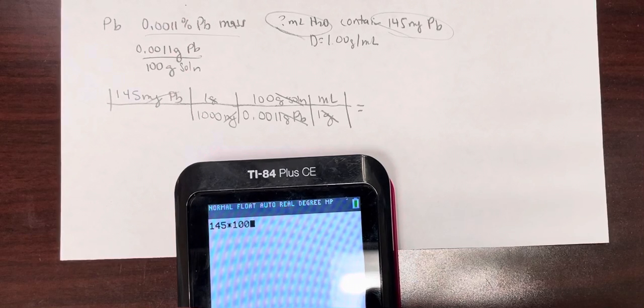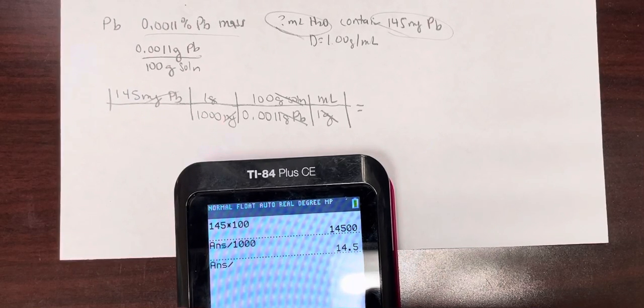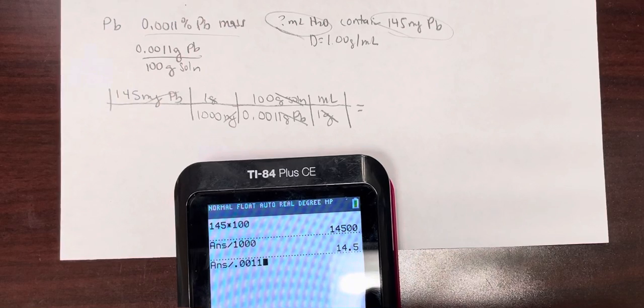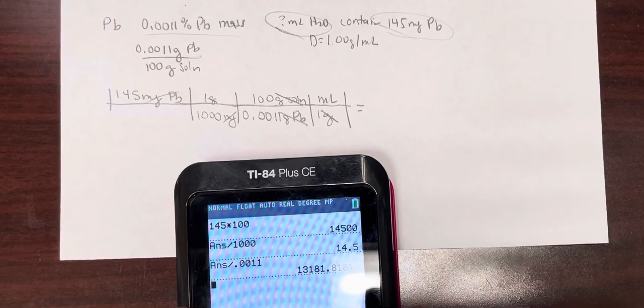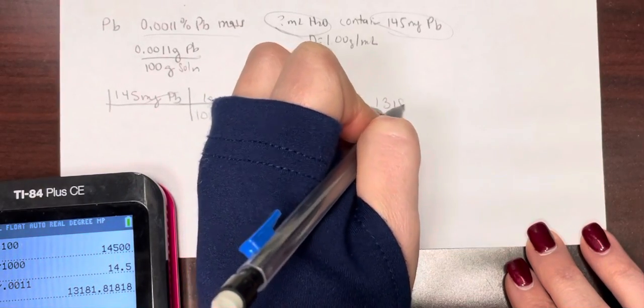145 times 100 divided by 1,000 divided by 0.0011. This is gonna be a big number. 13,182.